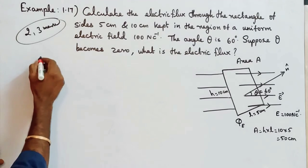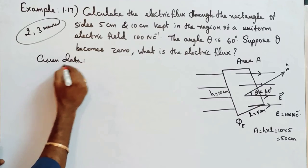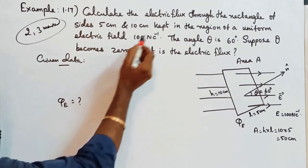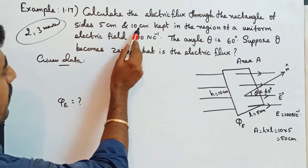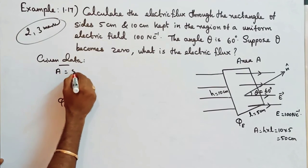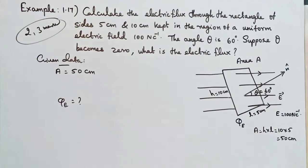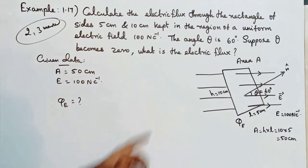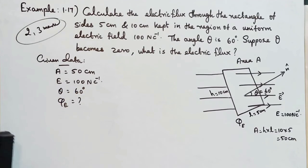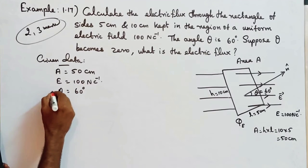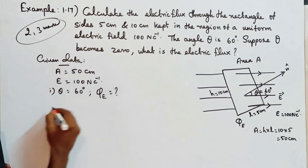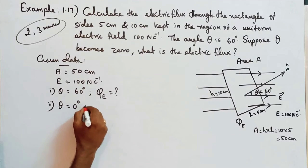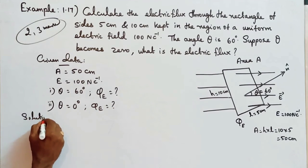So first we write the given data. What to calculate: electric flux Φ is equal to question mark. The rectangle sides are given as 5 centimeter and 10 centimeter, so the area A is equal to 50 centimeter squared. The uniform electric field E is equal to 100 newton coulomb power minus 1. Theta is equal to 60 degrees. In the first case theta is 60 degrees - what is the electric flux? In the second case theta is equal to 0 degrees - what is the electric flux?